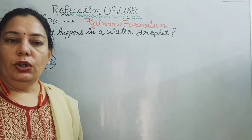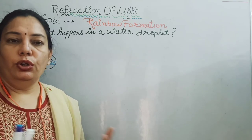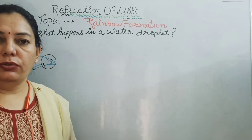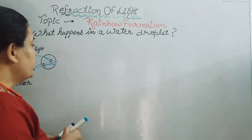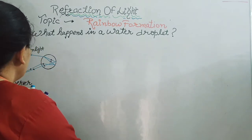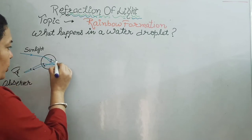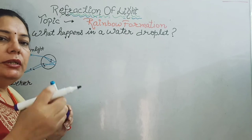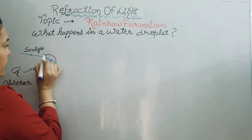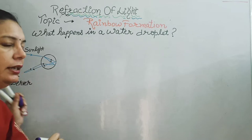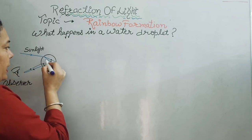We can observe a rainbow just after the rain. For that, there should not be clouds present in the atmosphere, and there should be a presence of sunlight. When sunlight shines on a water droplet present in the atmosphere and enters it, it crosses the interface of air and water — that is the point of incidence.